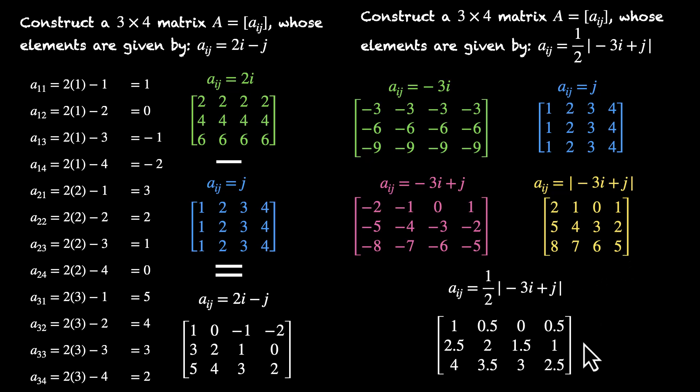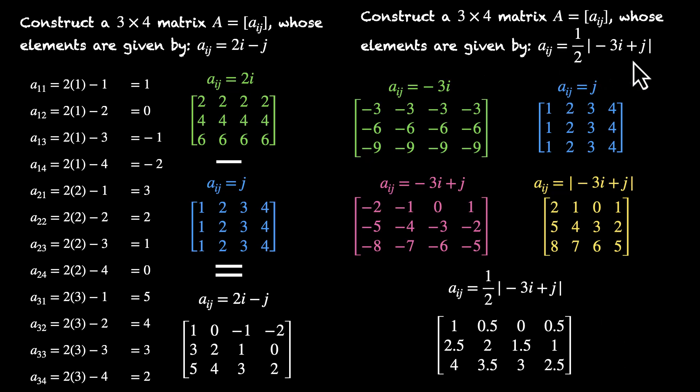So this is our answer — the 3x4 matrix given by Aij equals one half times the absolute value of (minus 3i plus j).